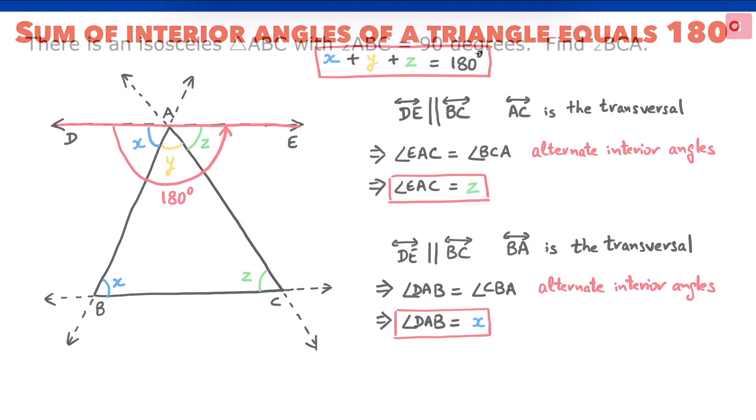Let's try a problem now. There is an isosceles triangle ABC with angle ABC equal to 90 degrees. Find angle BCA. Please pause the video and try this problem yourself.